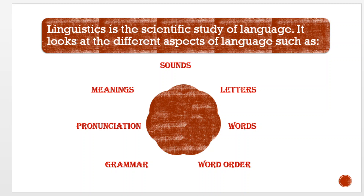There was a very deep attempt at learning the language structures of Latin, particularly in England. It was only in the late 19th century and the 20th century that a lot of attention came to be given to studying living languages, for example English or French. Until then, the structures of Latin were imposed on English or French. By the early 20th century there were focused attempts at studying living languages. English is living because it is used by thousands of people in everyday life. So linguistics evolved as a very important science.